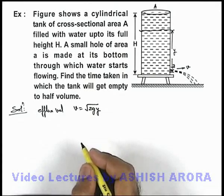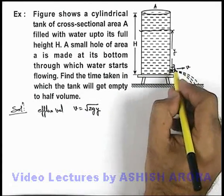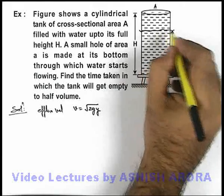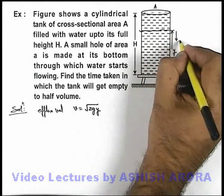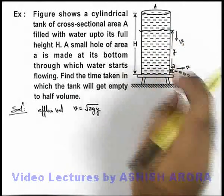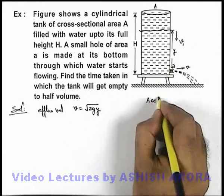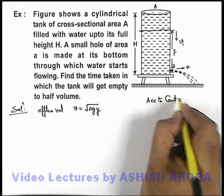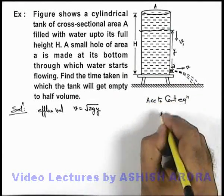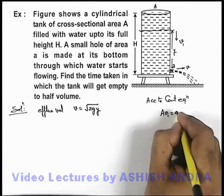As fluid is coming out through the hole, this water level will start moving down with speed v1. In this situation, according to continuity equation, we can write Av1 equals av.